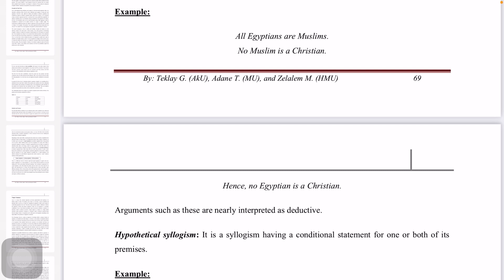For example: All Ethiopians are Muslims. No Muslim is a Christian. Therefore, no Ethiopian is a Christian. These are interpreted as deductive arguments because categorical syllogisms with 'all' and 'no' provide absolute support to the conclusion.